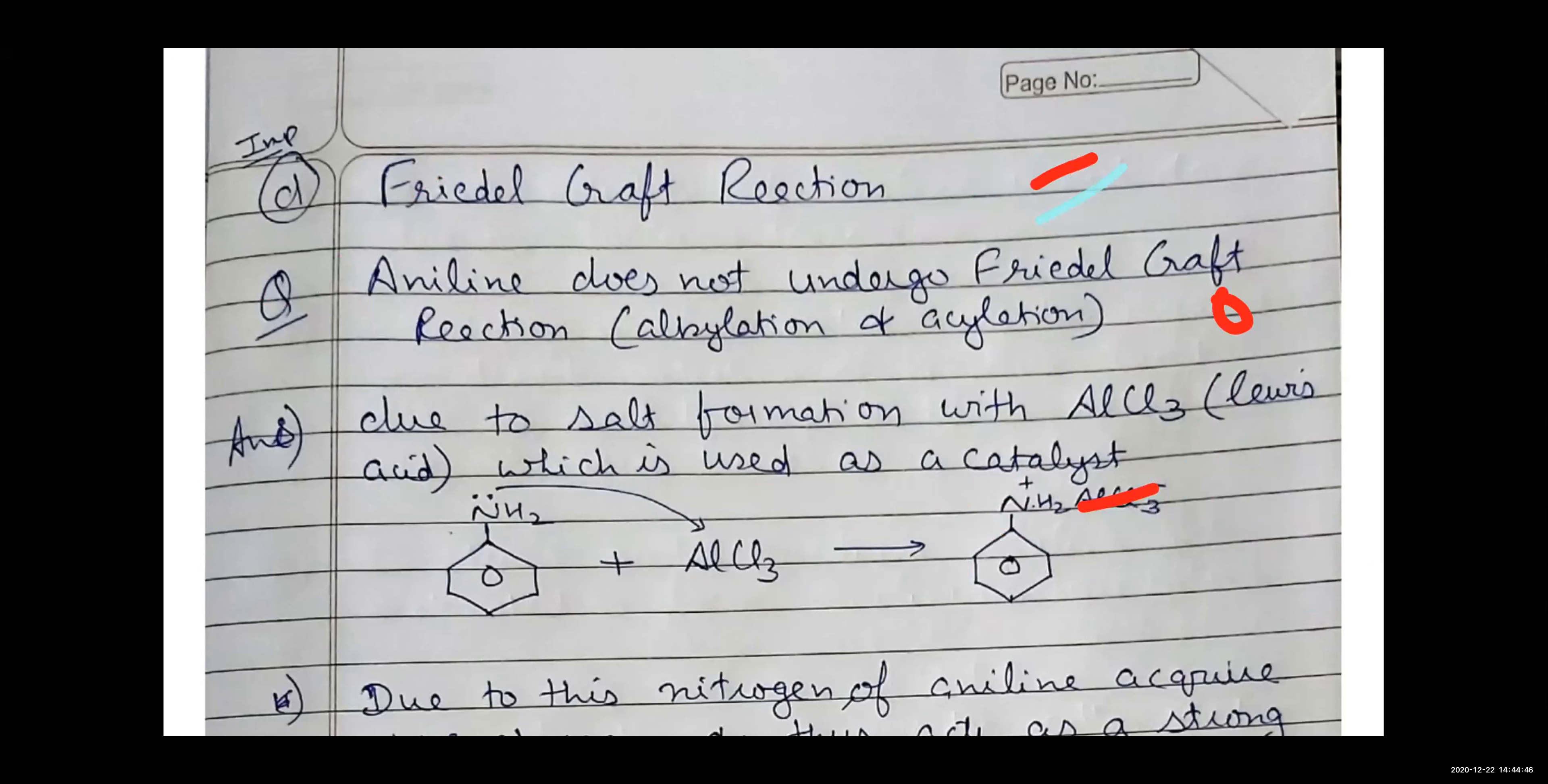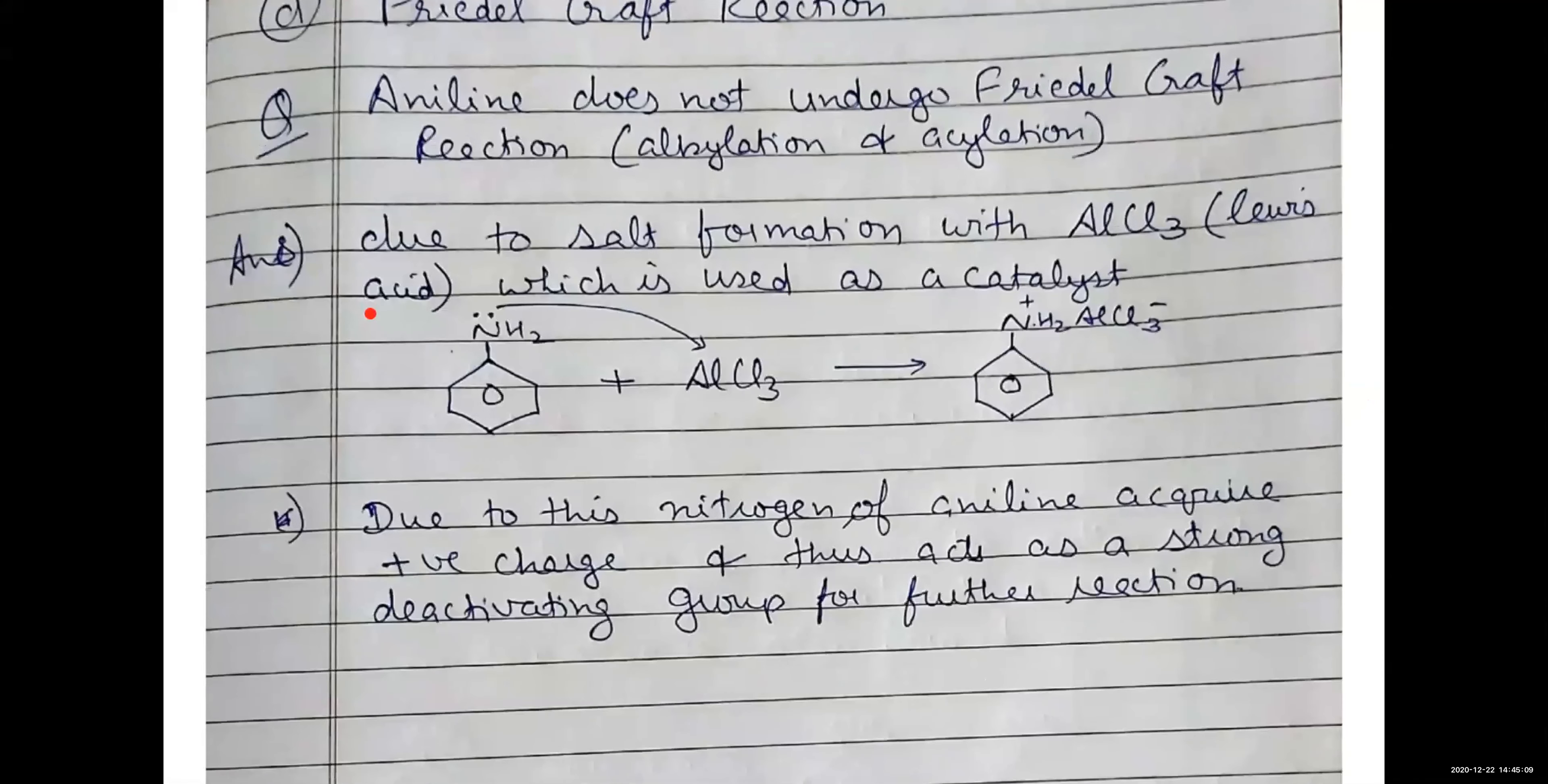What happens with aniline? The catalyst is a Lewis acid. When you talk about aniline, it has a lone pair on nitrogen. What happens with aniline? It is a Lewis base. Both of them get a Lewis base and a Lewis acid. They make a salt.